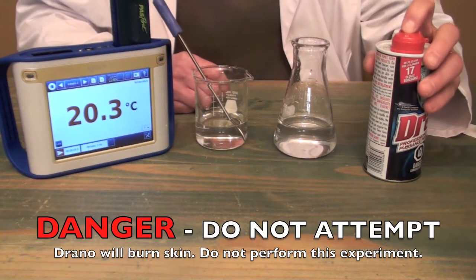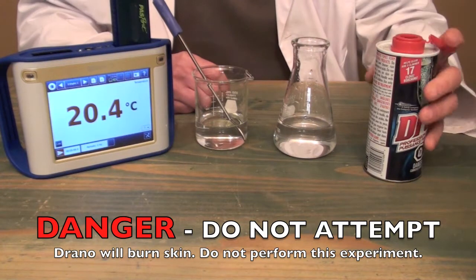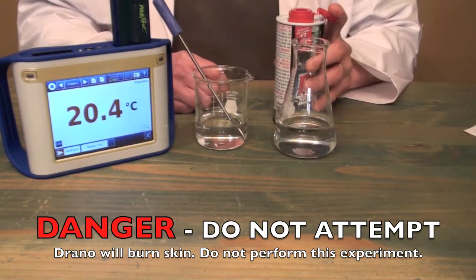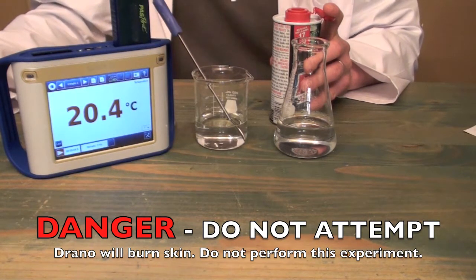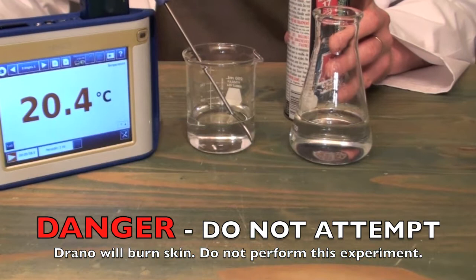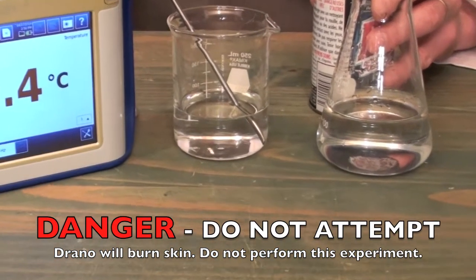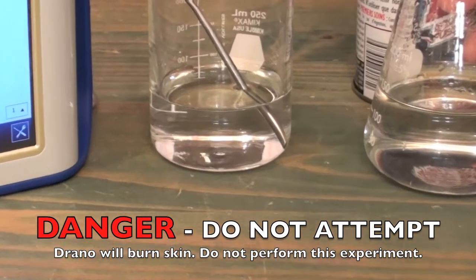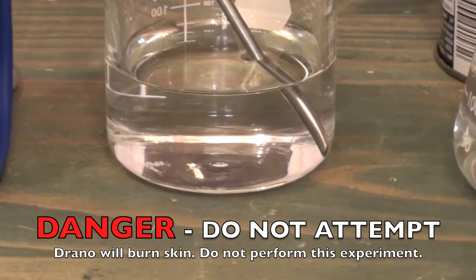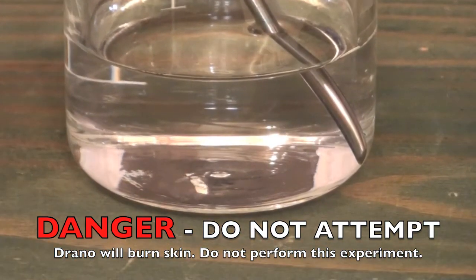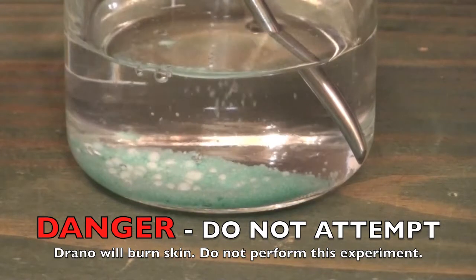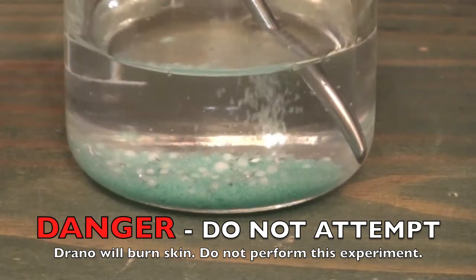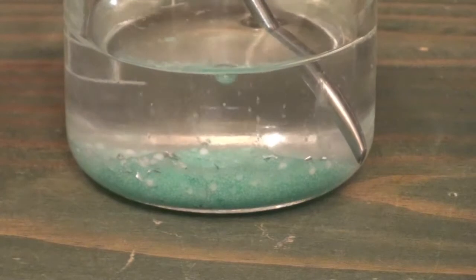And then what we're going to do is add some Drano. Now in order so that we can see the exact details of the reaction, we're just going to zoom right in on the beaker nice and close. And then I'm going to add some Drano. And what you want to do is watch closely to see what's happening. There we go.